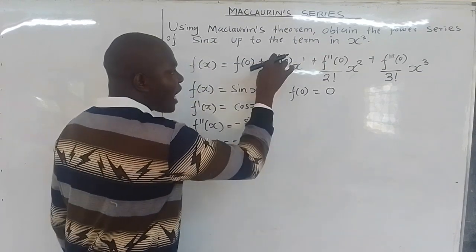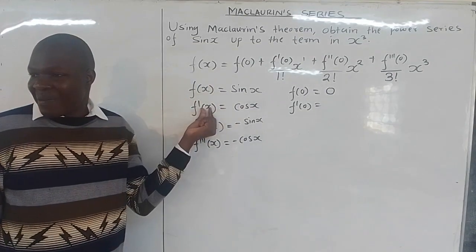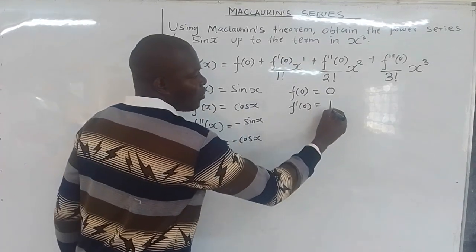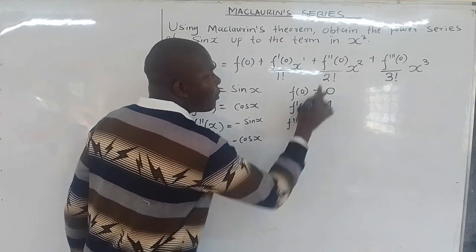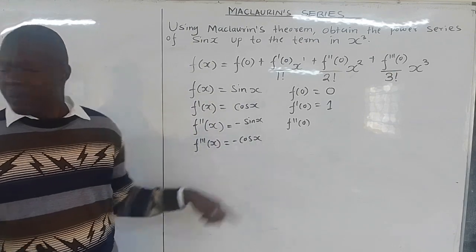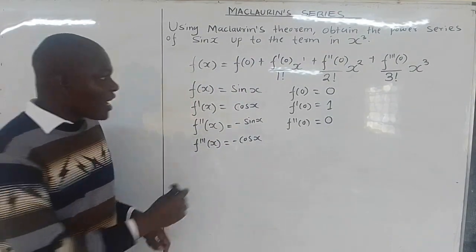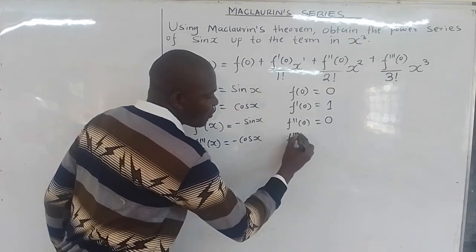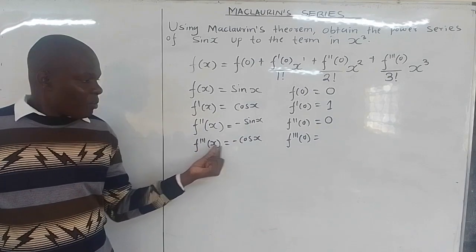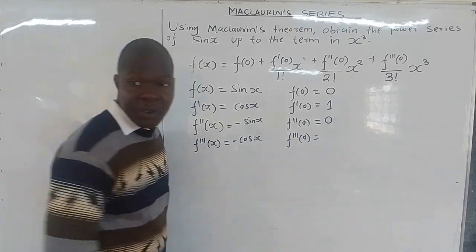f′(0) = cos 0 = 1. Then f″(0) = −sin 0 = 0. Then f‴(0) = −cos 0 = −1.